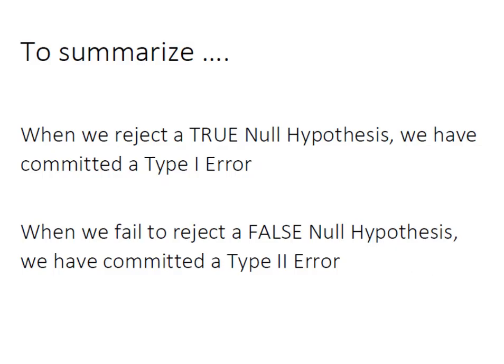So just to summarize, when we reject a true null hypothesis, we commit a Type I error. Or, when we fail to reject a false null hypothesis, we commit a Type II error.